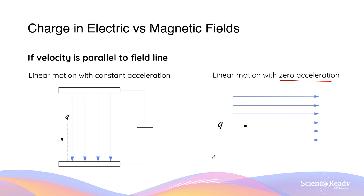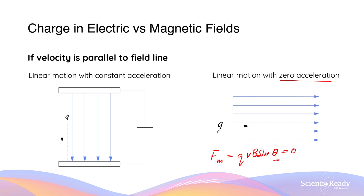This is because the magnitude of the magnetic force is given by QVB sinθ, where the angle θ is the angle between the velocity vector and the magnetic field lines. If the velocity is parallel to the field lines, the angle θ will be zero. Sin(0°) gives a value of zero, which is why the charged particle will have no forces acting on it, and therefore an acceleration of zero.